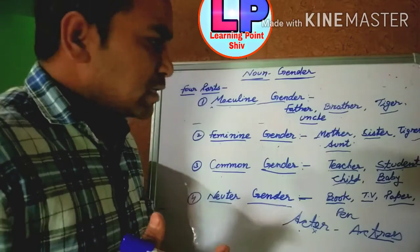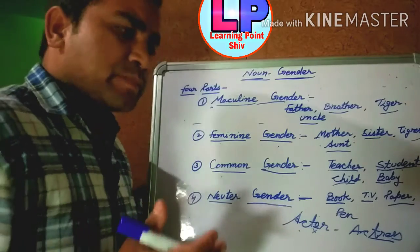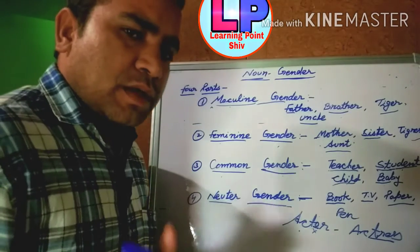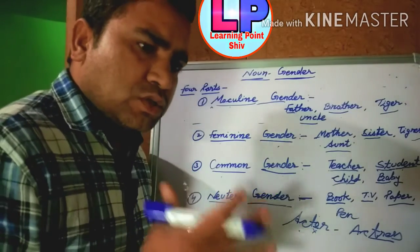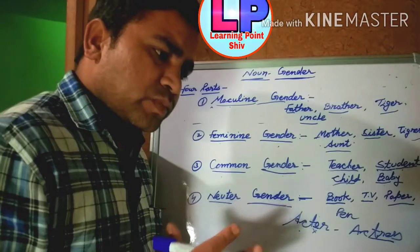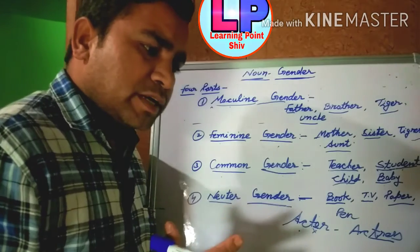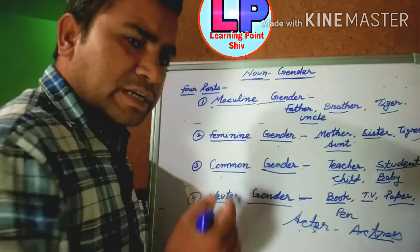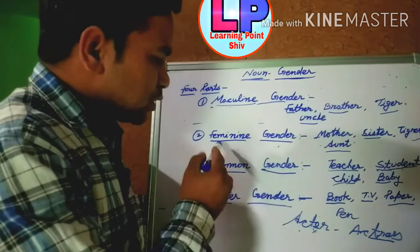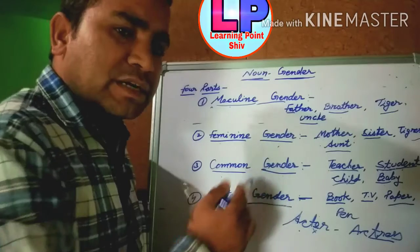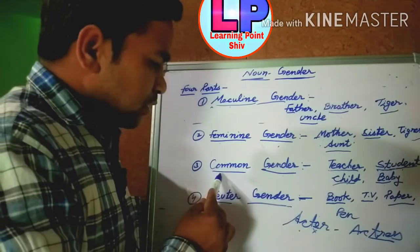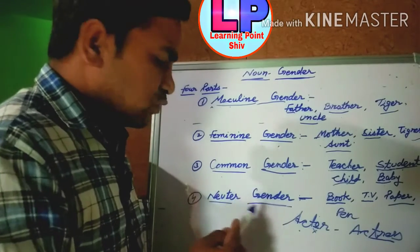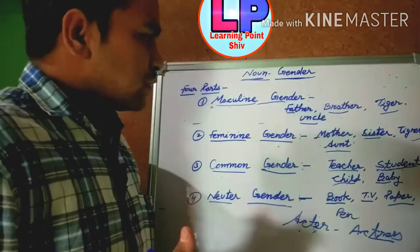Hello students, our topic is noun gender. Noun gender in English is 4. Number 1 is masculine gender, number 2 is feminine gender, number 3 is common gender, and number 4 is neuter gender.